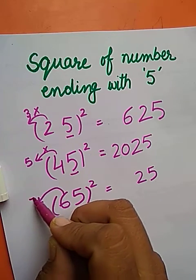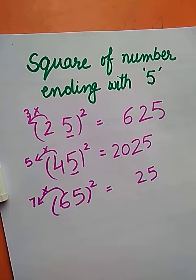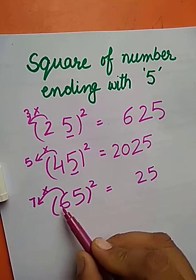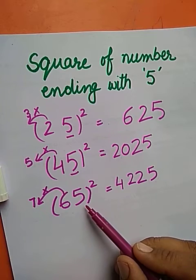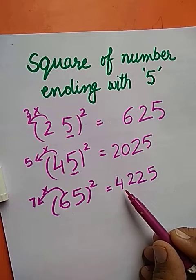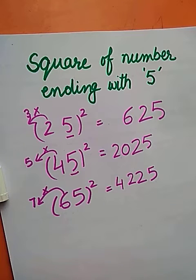The number next to 6 is 7. We will take the product of 6 and 7. 7 times 6 is 42. So square of 65 is 4225.